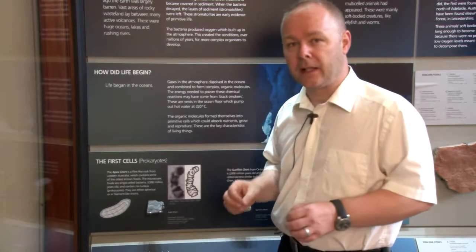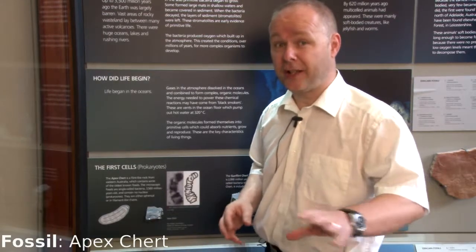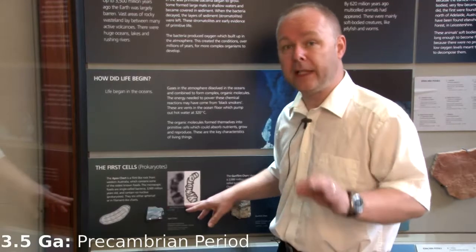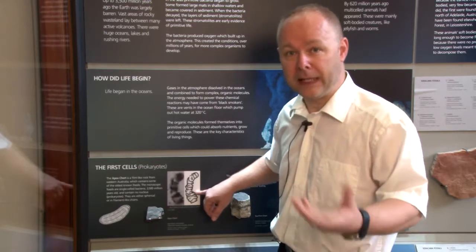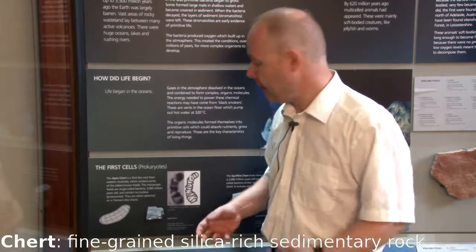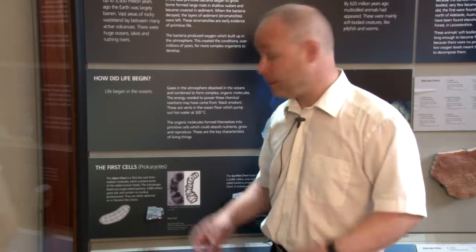If you want to place a finger on the history of life on Earth — that point where life begins — the Apex Chert is a pretty good place to start. Here, some 3.5 billion years ago, in what is Australia today, tiny little single-celled organisms appear, and we find their fossils in these very rare chert-like deposits, ideal for preserving this fine cell structure that might represent some of the earliest life on Earth.